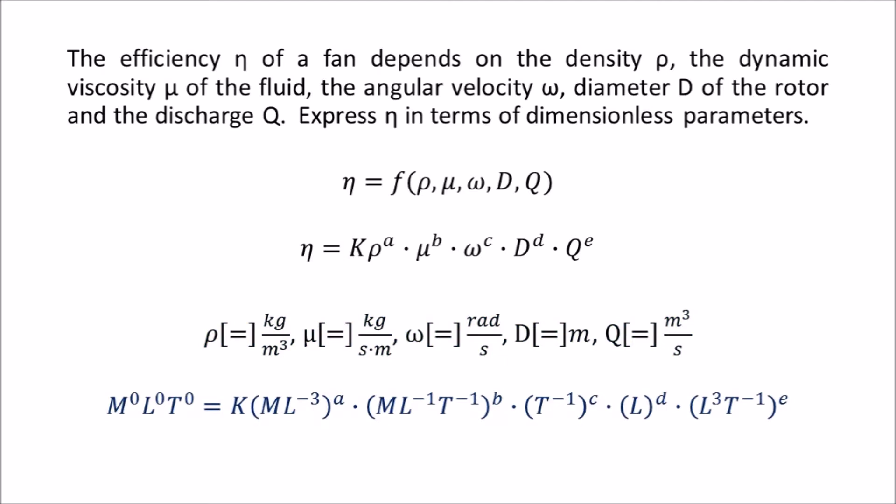So now we rewrite the equation for efficiency in terms of dimensions, with the exponents on each dimensional term on the right-hand side corresponding to the units of each component above. And you should note that on the left-hand side, each exponent is zero, because our resulting efficiency should be dimensionless.